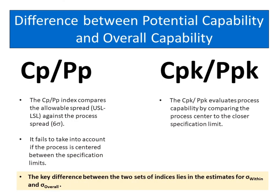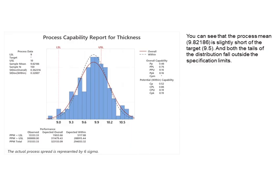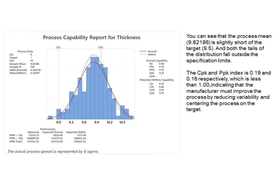The CP/PP index compares the allowable spread (USL minus LSL) against the process spread (Six Sigma). It fails to take into account whether the process is centered between the specification limits. The CPK/PPK evaluates process capability by comparing the process center to the closer specification limit. You can see that the process mean, 9.82186, is slightly short of the target 9.5, and both tails of the distribution fall outside the specification limits. The CPK and PPK indices are 0.19 and 0.16 respectively, which is less than 1.00.